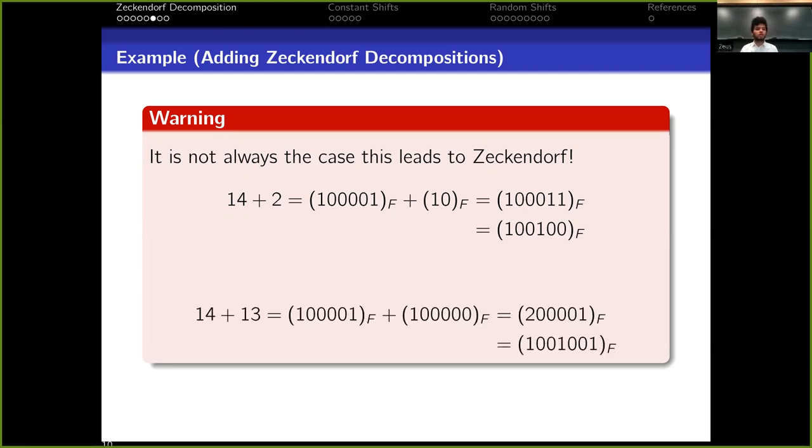Another thing that can go wrong is if, for example, we add 14 and 13, they both have 13 in the decomposition, F₆, and we cannot have two of the same summands. But we can use the fact that two times F₆ is F₇ plus F₄ to simplify that string and get the Zeckendorf composition of 27. So we need those extra rules to simplify when we add coordinate by coordinate the strings.